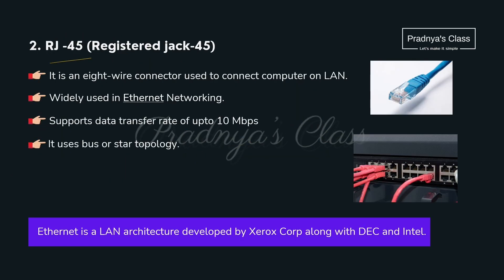The second network device is RJ45, Registered Jack 45. Look at the diagram — it is an 8-wire connector, majorly used in Ethernet networking, and it provides 10 Mbps of transfer rate.